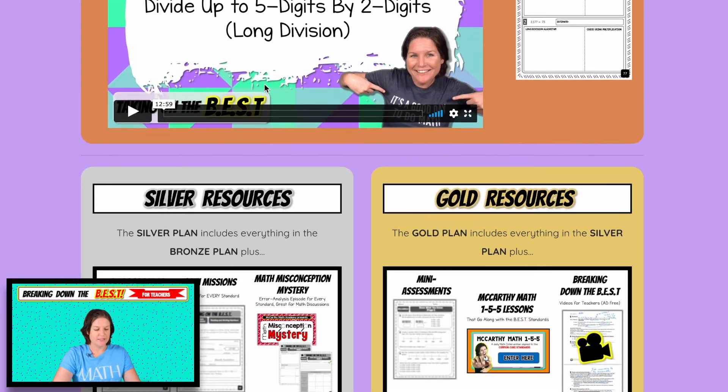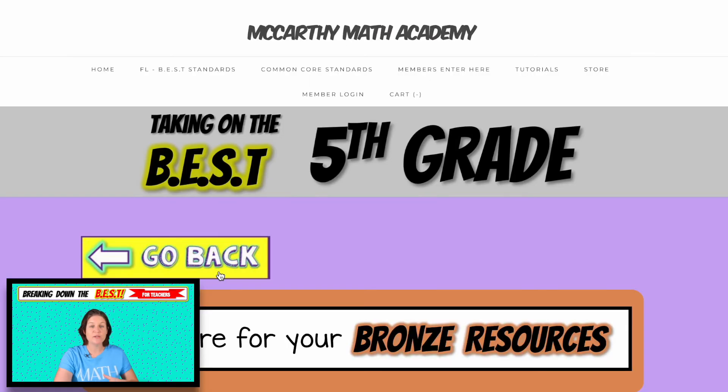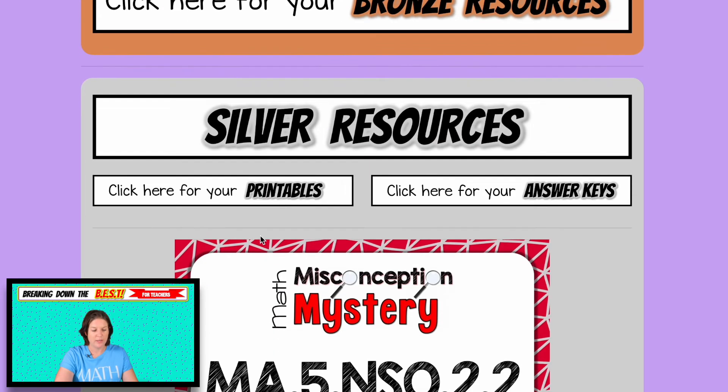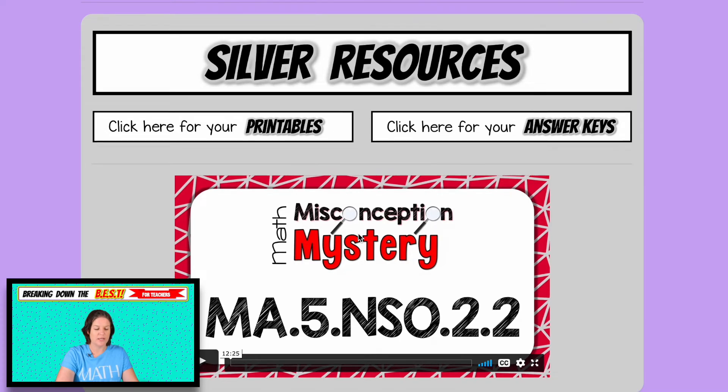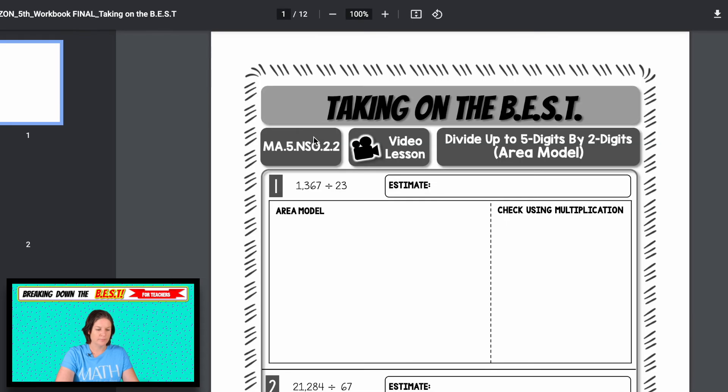So it's a pretty heavy lesson. There's only two problems. But look, we're estimating, we're solving it, and we're checking it. Okay, with two problems. So those are your three lessons there. And then you can go to the silver plan. If you have access to it, it will load if you do not have access to it, it's because it's not part of your membership. And if you want to upgrade at any time, just let me know.